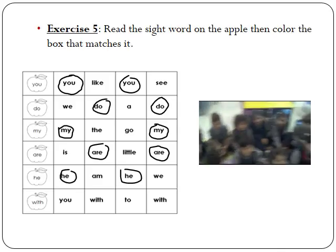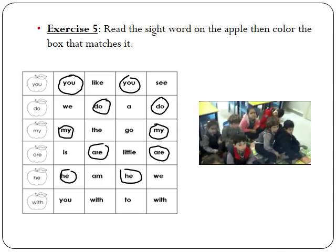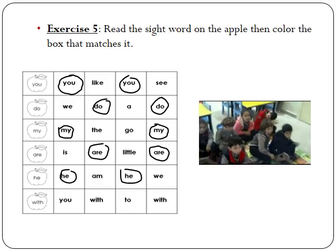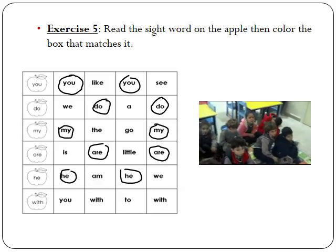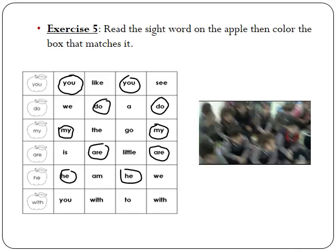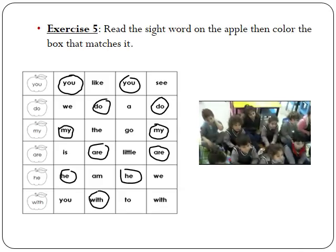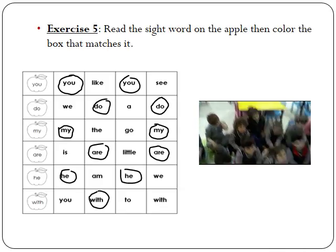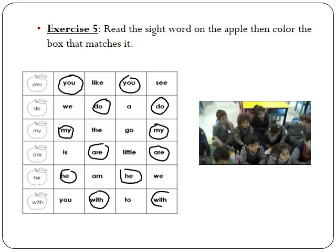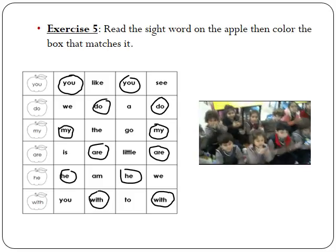Let's see the last apple. With. Do I circle the first word? No. What is this word? You. What about this? With. I circle with. And this is? Two. What about the last one? With. I want to hear a very big clap for KG2.